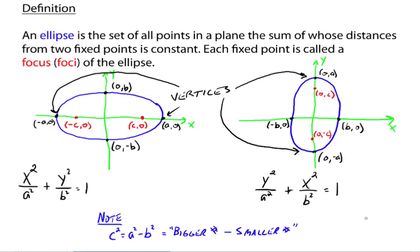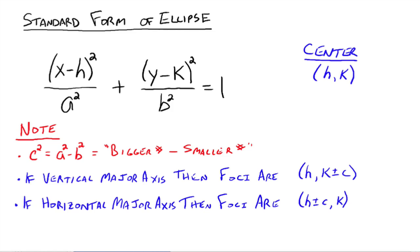That's when the center is at the origin. To generalize, here is the standard form for the ellipse: x minus h squared over a squared plus y minus k squared over b squared equals 1. The center would be (h, k), just like it was for the circle. Note that c squared is again the bigger number minus the smaller number — a squared is not necessarily always going to be under the x term. If you have a vertical major axis, the larger number is underneath your y squared term.